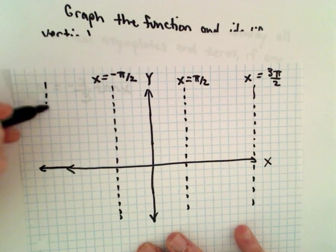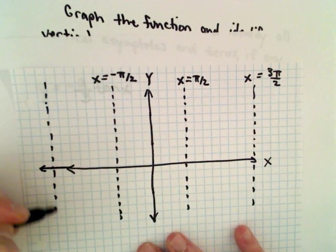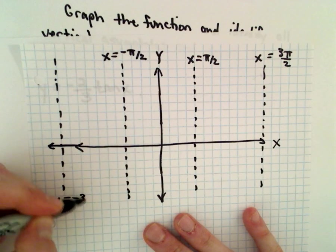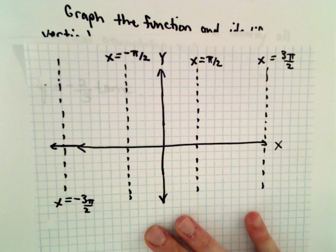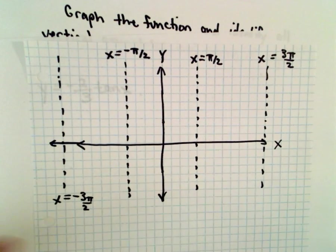I'm not going to count exactly, but over here at x equals negative 3 pi over 2, again we'll have another vertical asymptote.